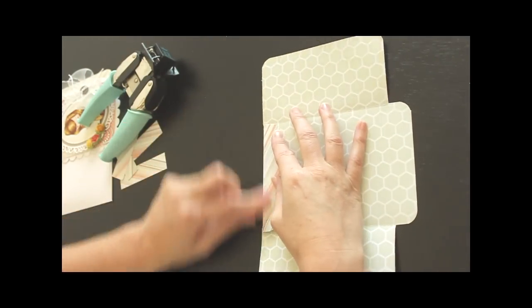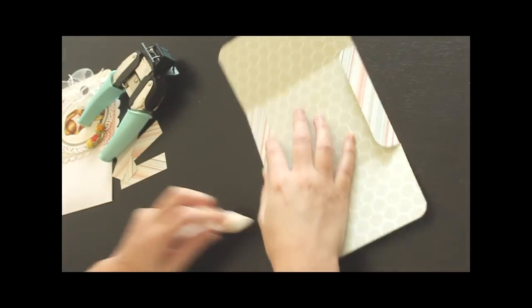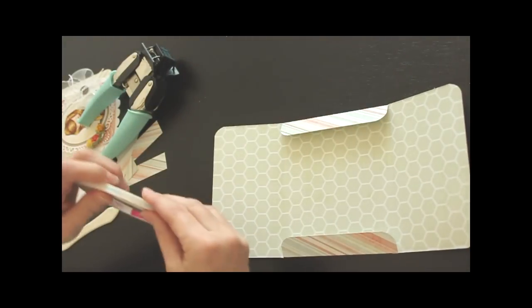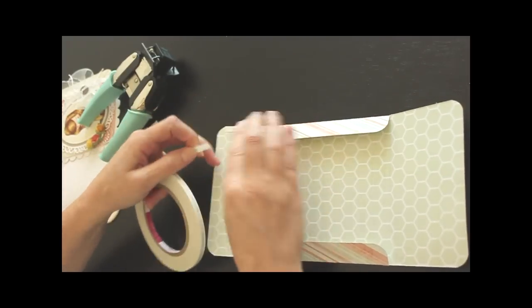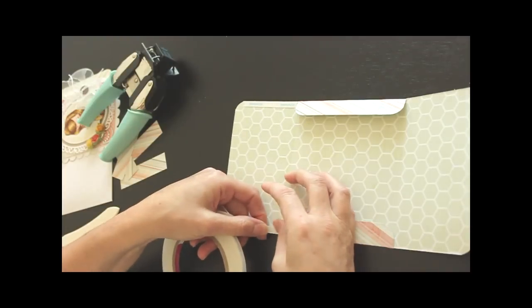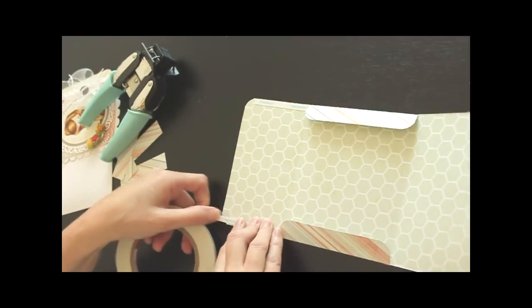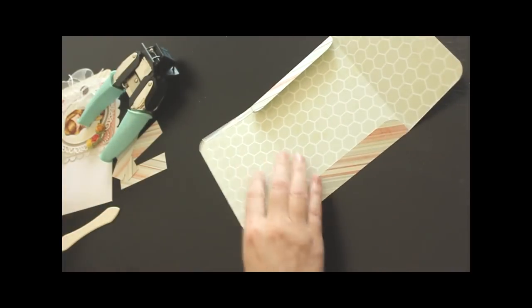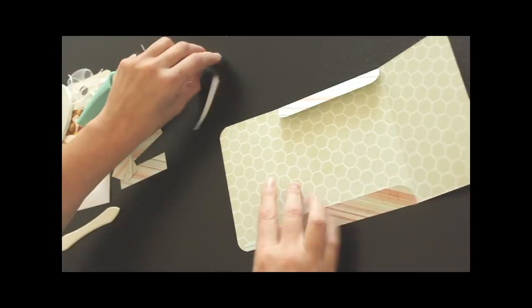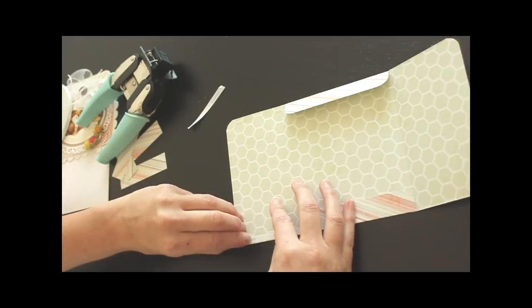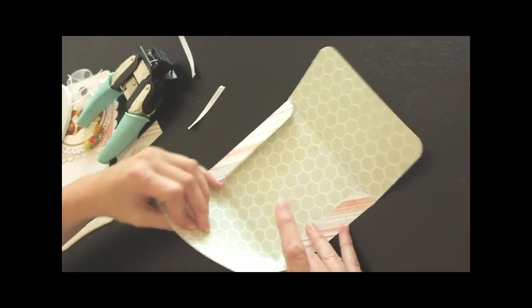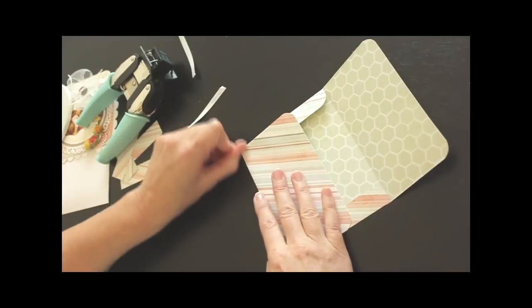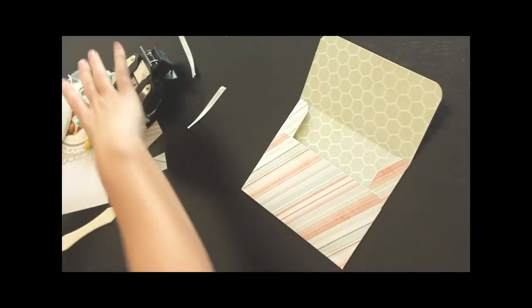Fold your flaps in, and add adhesive to the edges of one of the sides. If you add adhesive to the flap, you don't know how high your side will go. This way is foolproof, and you won't have adhesive sticking out. Now you fold that over, and your envelope is done.